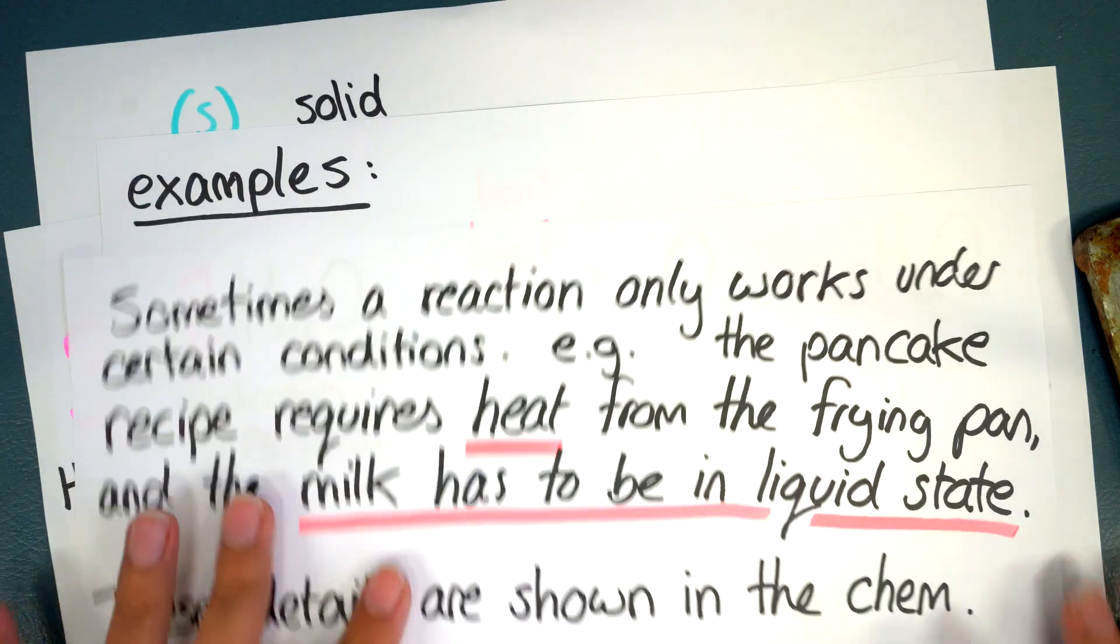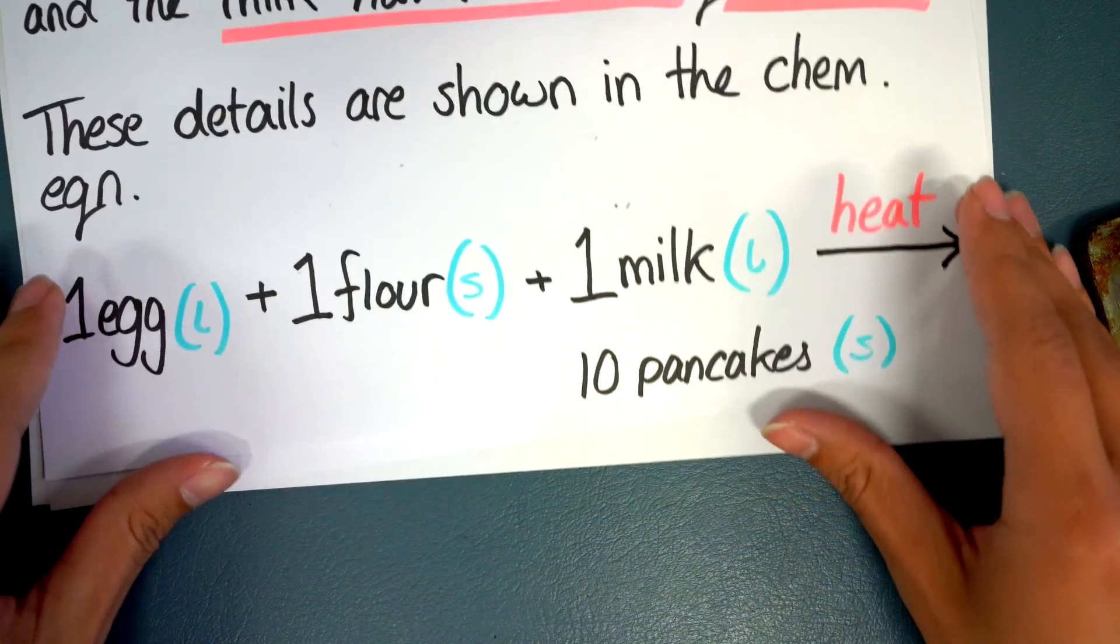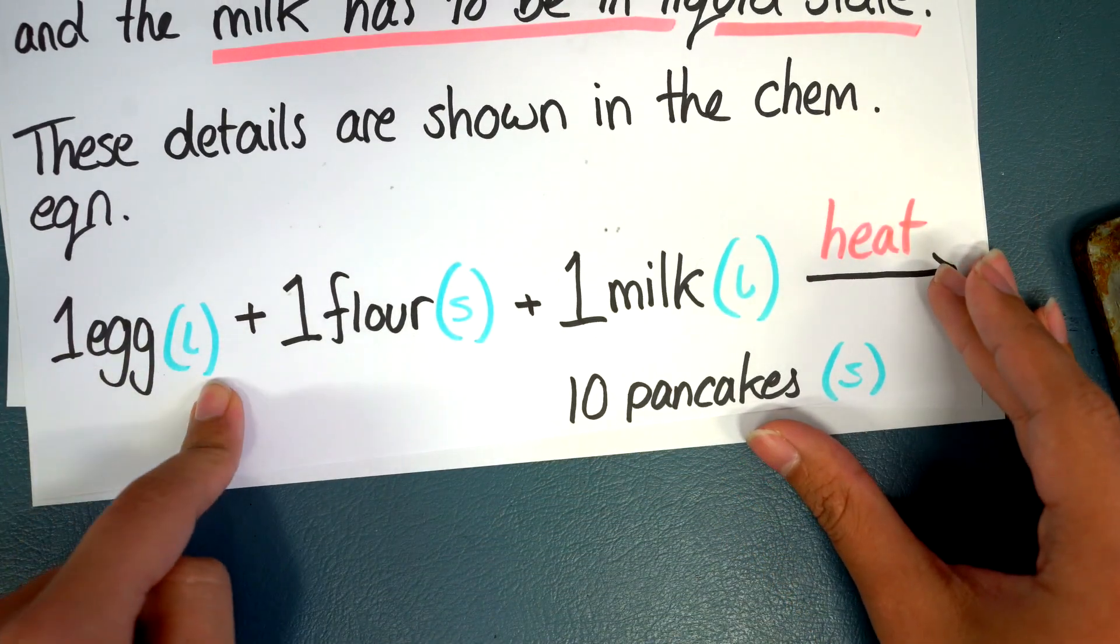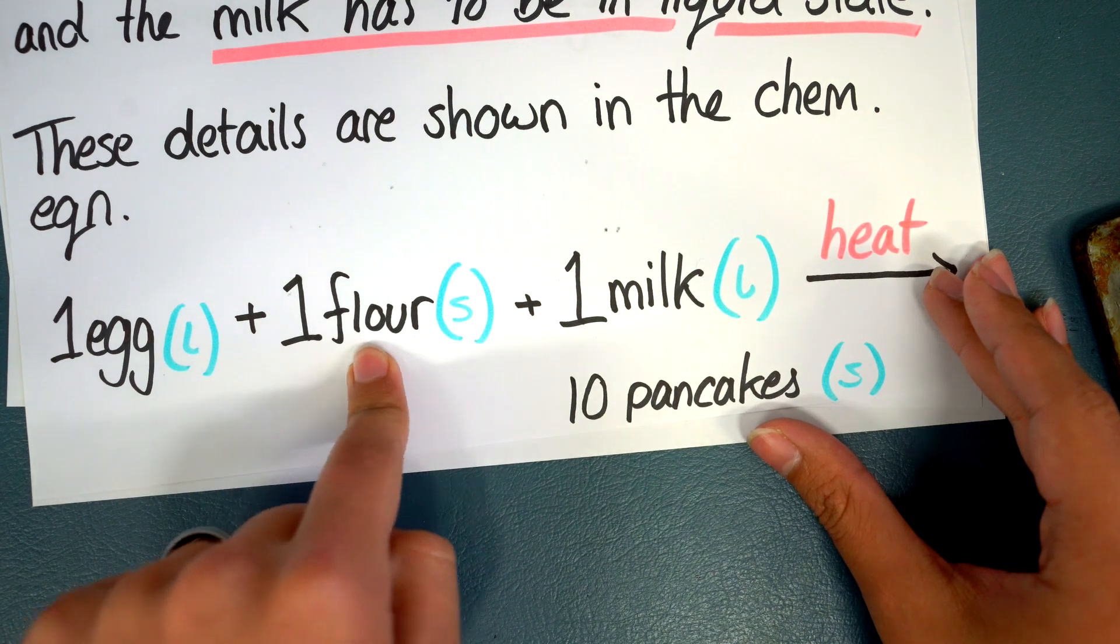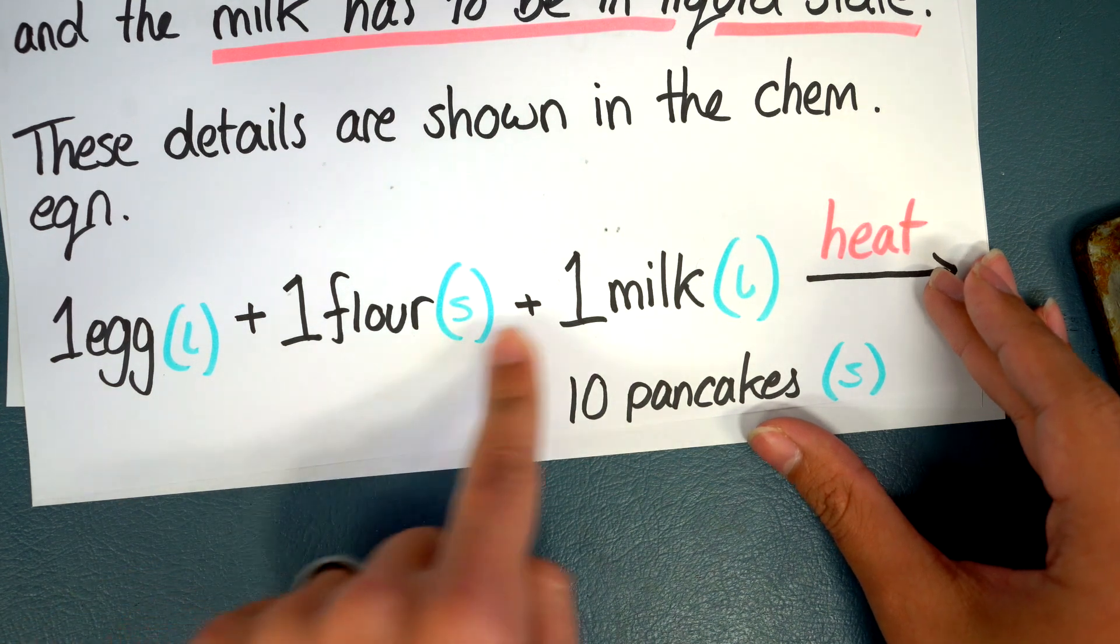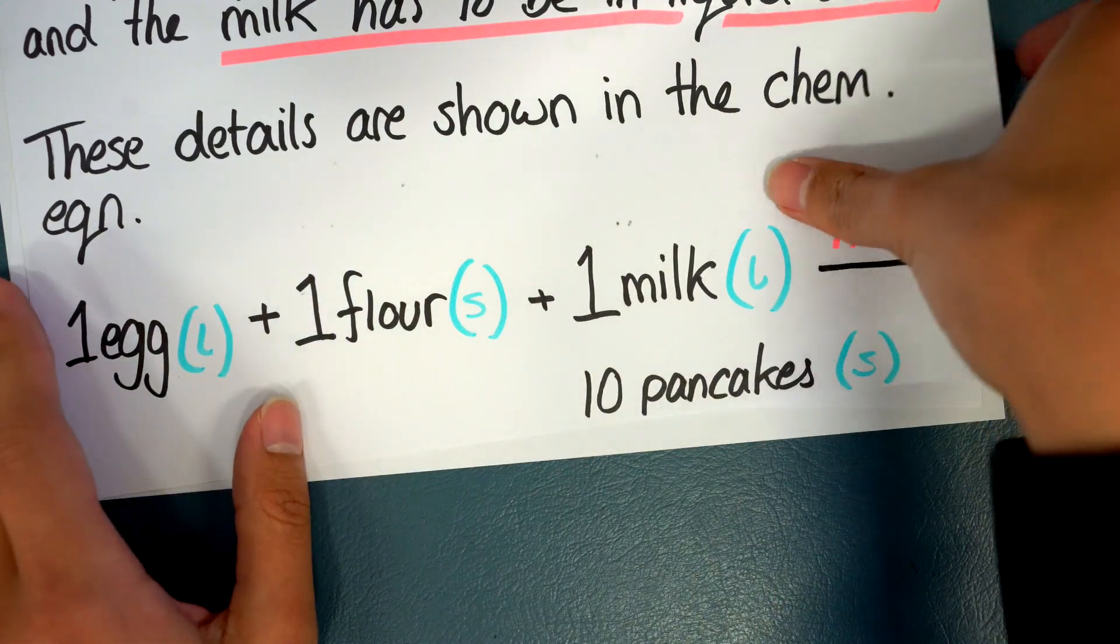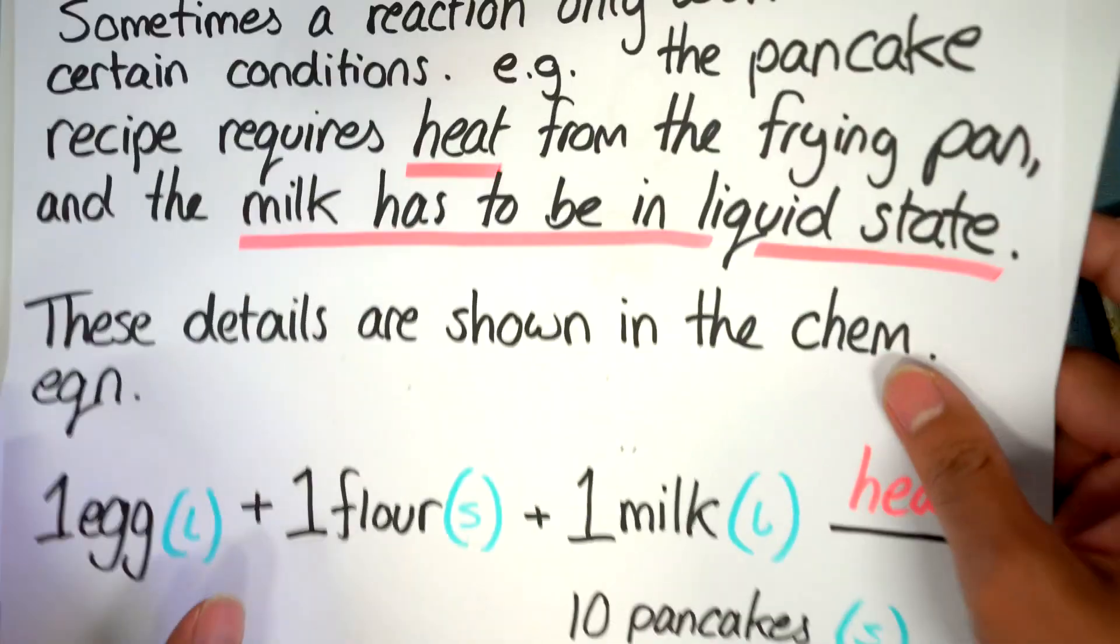Okay these can be shown here for example. So I've again returned to the pancake recipe but this time I've written in that the egg must be liquid state, the flour solid state like a powder, the milk in liquid state and the pancakes would be in solid state. That's what you can expect it to become.